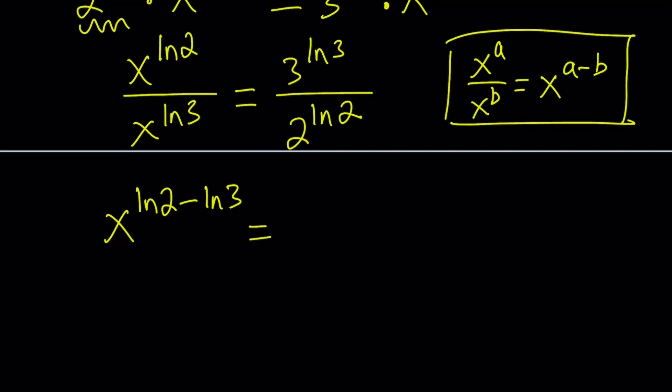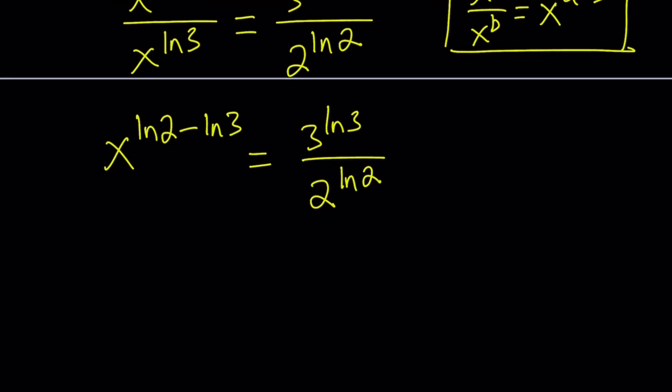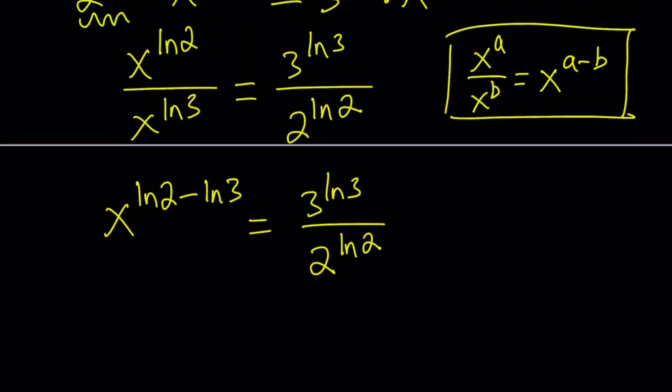The right-hand side has different bases and different exponents, so there's not much we can do — we can convert the bases, but that won't be super helpful. Just leave it as is. There's some type of symmetry here, and the next thing to do would be to solve for x.